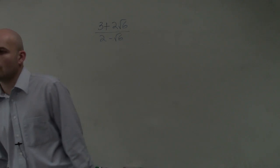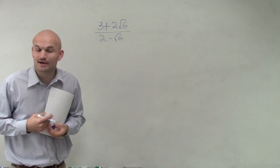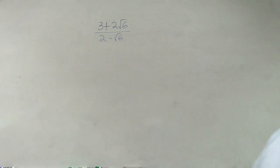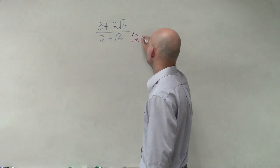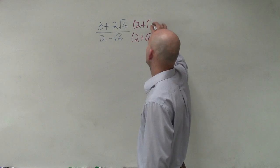To finish up this problem, all you need to do is multiply by the conjugate. Remember, we cannot divide by a radical number, so we're going to multiply by the conjugate. The conjugate in this problem is 2 plus the square root of 6, and you multiply that on the top and the bottom.